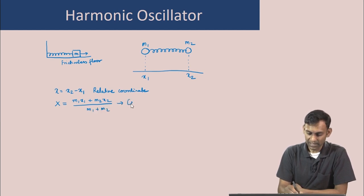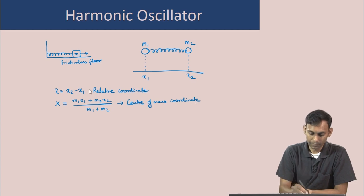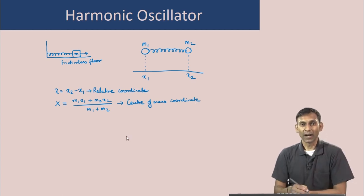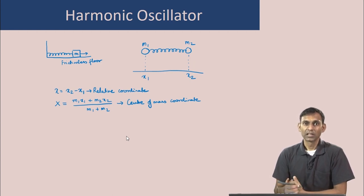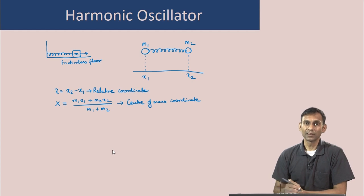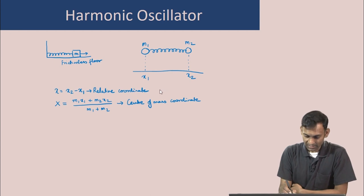This is the center of mass coordinate. Our goal is to write the Hamiltonian of this two-mass problem in terms of these new coordinates — the relative coordinate and the center of mass coordinate. We will express x1 and x2 in terms of the relative coordinate and the center of mass coordinate. Let us call the relative coordinate equation 1 and the center of mass coordinate equation 2.